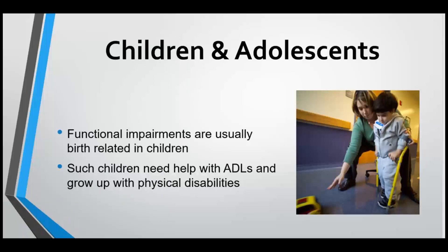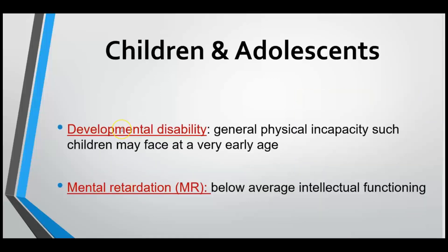Some children and adolescents need long-term care due to birth-related functional impairment, including brain damage that can occur before or during childbirth. Examples of birth-related disorders include cerebral palsy, autism, spina bifida, and epilepsy. These children grow up with developmental disabilities and may need help with activities of daily living. Some children have intellectual disabilities such as Down syndrome, and they also grow up to be developmentally disabled. A developmental disability involves a general physical incapacity or mental retardation, where intellectual functioning is below average.